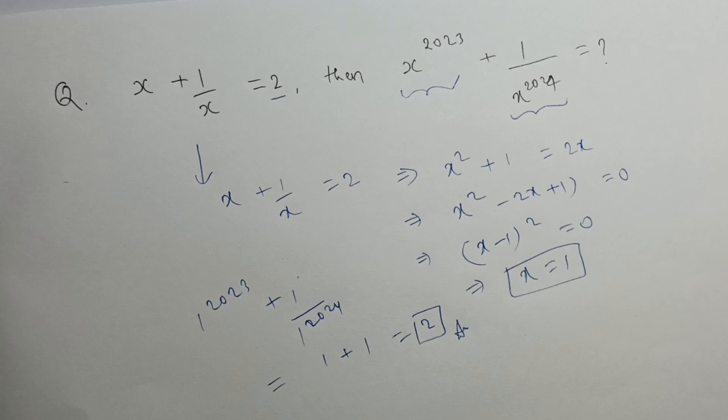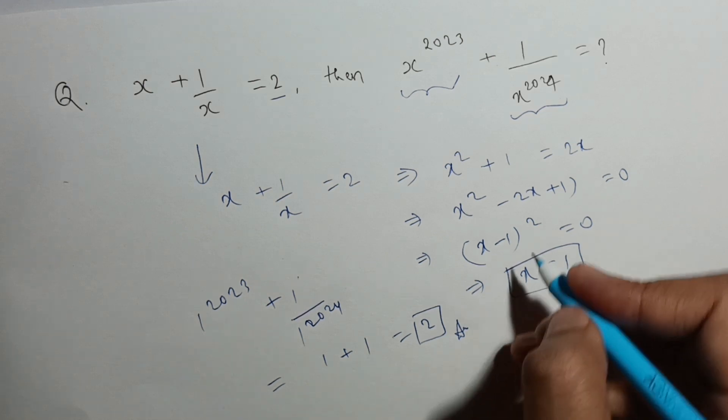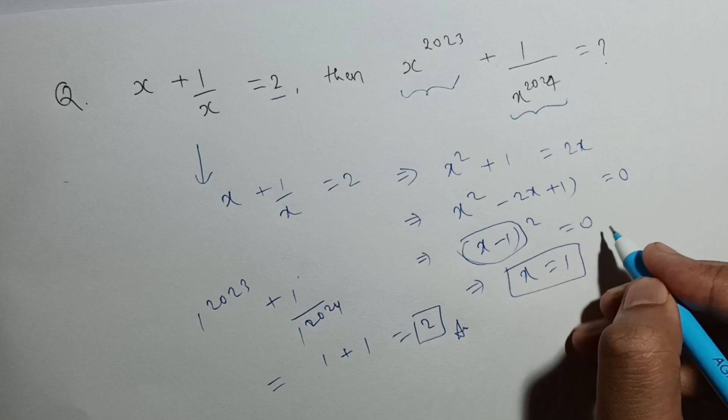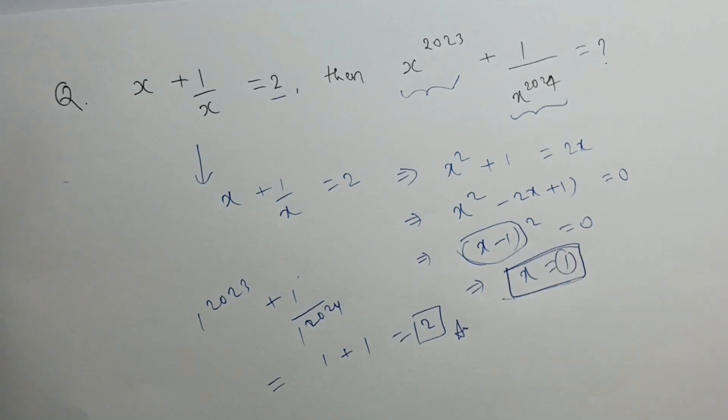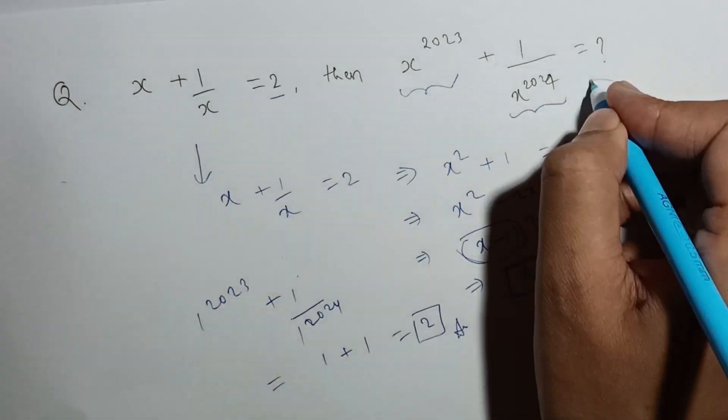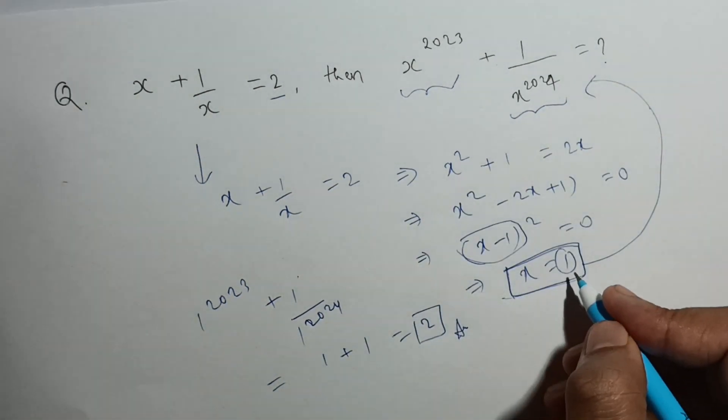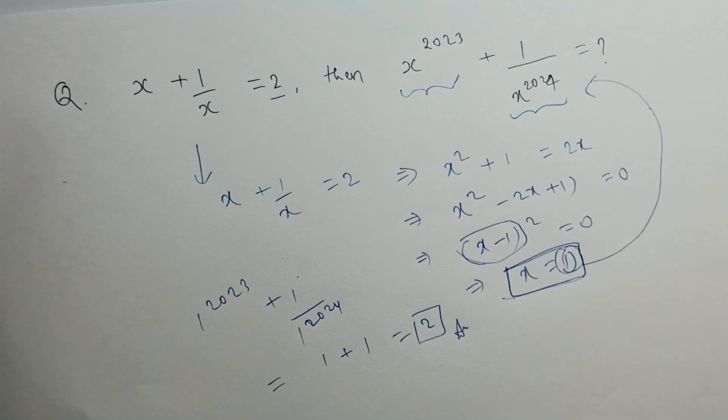So this way we can solve such questions. Once you figure out that this is nothing but a perfect square of x minus 1, so you got the value of x. And since you got x equal to 1, this is very easy. So any expression will be very easy to find, right? Since you got direct value of x and that is also 1. So any higher powers of 1 will also be 1. So thank you.